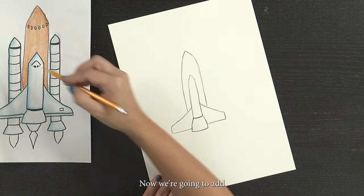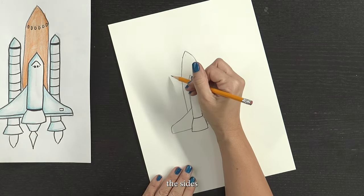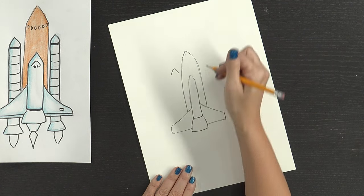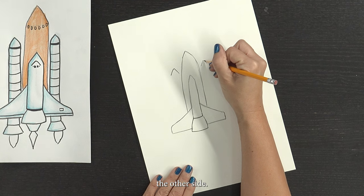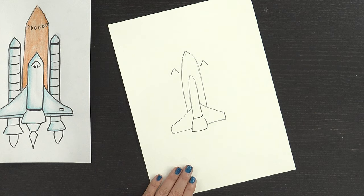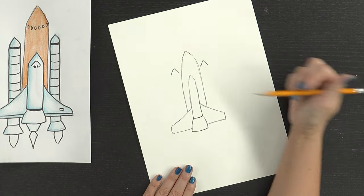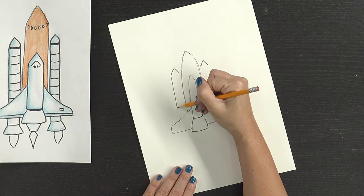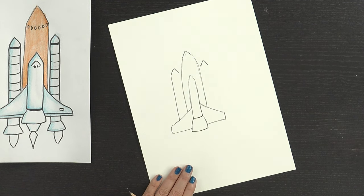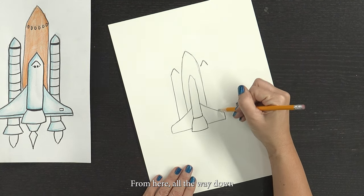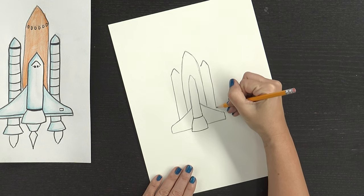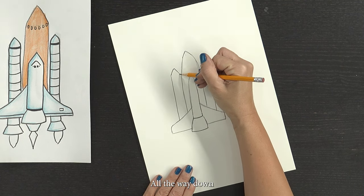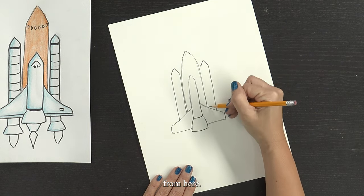All right, now we're going to add the sides. Another upside-down V. Same thing on the other side. Extend the line from here all the way down. Same thing on this side. And the inside from here all the way down.